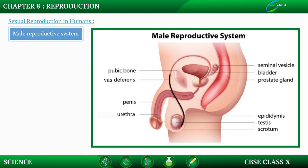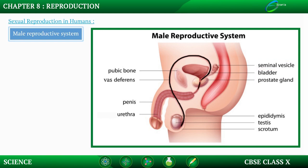The vas deferens transports sperms, meanwhile the prostate gland and seminal vesicle liquefy the mucus-like semen, which helps smooth transportation of semen. Then the urethra carries semen as well as urine, so the urethra has a common passage for urination and semen.